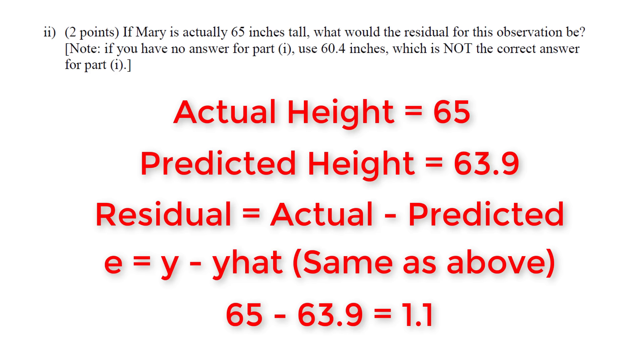We get 1.1, meaning Mary is 1.1 inches taller than predicted. The line would be underneath her—we under-predicted because she's 1.1 inches taller than the prediction of 63.9. This interpretation of the residual isn't required but helps understanding.